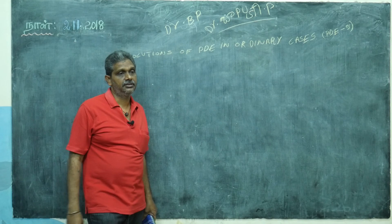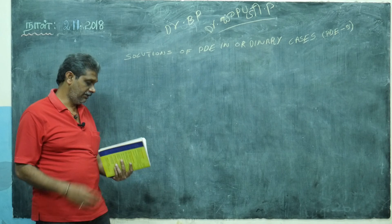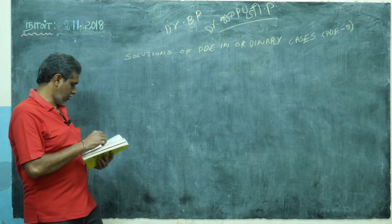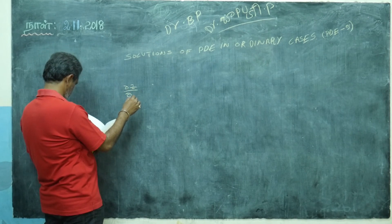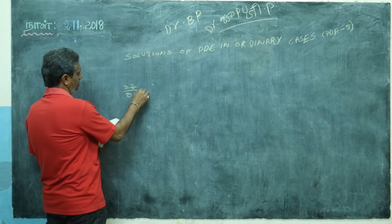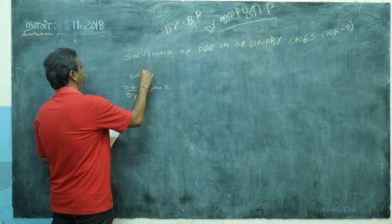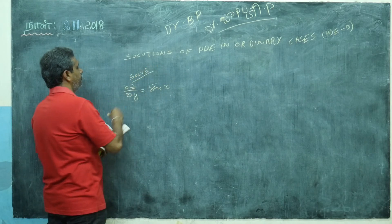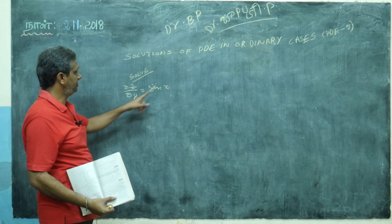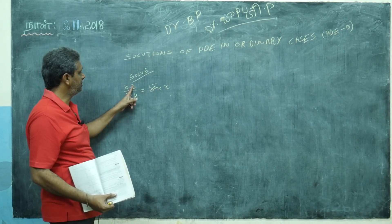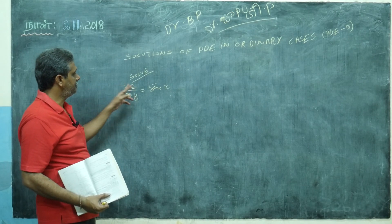Now, the next case is the solution of PDE in ordinary cases. How to do it — they will give one equation like: Solve ∂z/∂y = sin x. From this, you understand z is differentiated with respect to y. Solve means I want to find z.